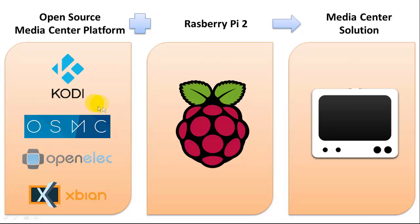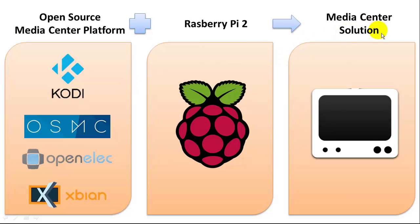There are three different off-the-shelf, open-source solutions based on Kodi: OSMC, OpenELEC, and XBN. They're all Linux-based solutions that use Kodi as the core. We're going to show you how to install these on a Raspberry Pi 2, which is about a $40 all-in-one single-board computer — a very low-cost computing solution that's great for this type of embedded application. With those two items, we're going to be able to build a home media center solution, and it's pretty simple.